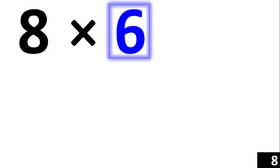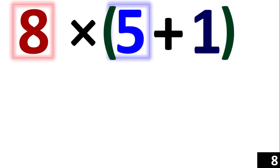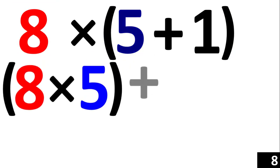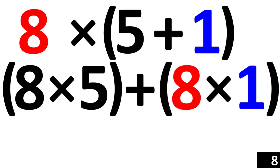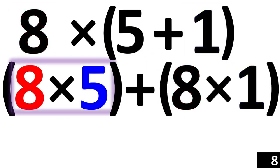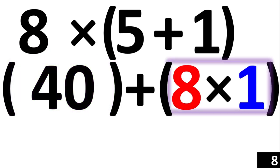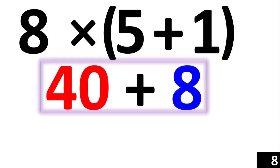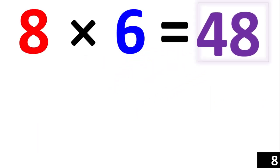8 times 6 is the same thing as 8 times 5 plus 1. Using the distributive property, we now have 8 times 5 plus 8 times 1. 8 times 5 is equal to 40, and 8 times 1 is equal to 8. Adding them together, 40 plus 8 is equal to 48. Therefore, 8 times 6 is equal to 48.